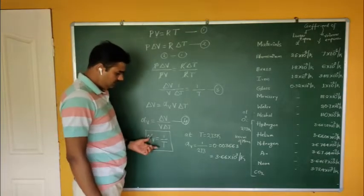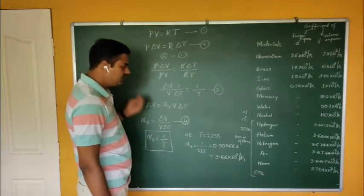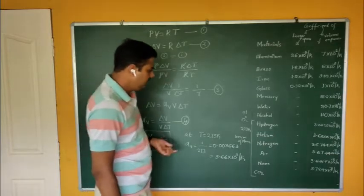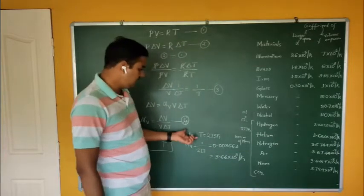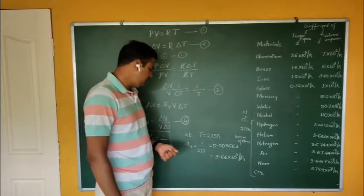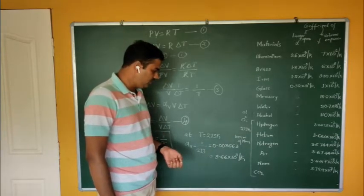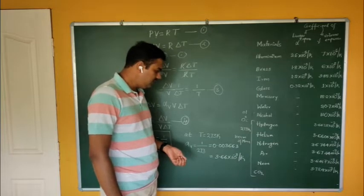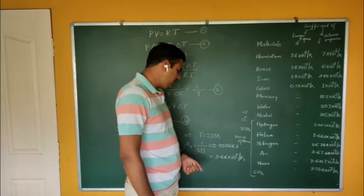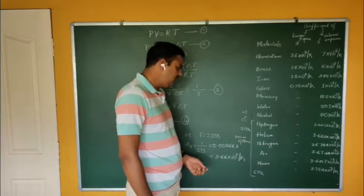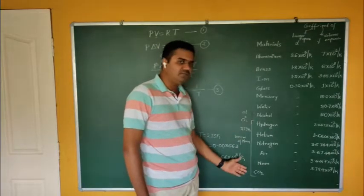The alpha V only depends on the absolute temperature and does not depend on the nature of the gases. Just verify it: when temperature is taken as 273 Kelvin, the value of alpha is 1 divided by 273, which equals 0.00863, or 3.66 × 10⁻³ per Kelvin. That means our theory exactly 100% matches with the experiment.